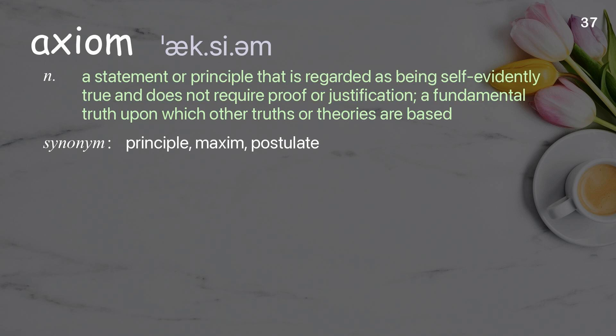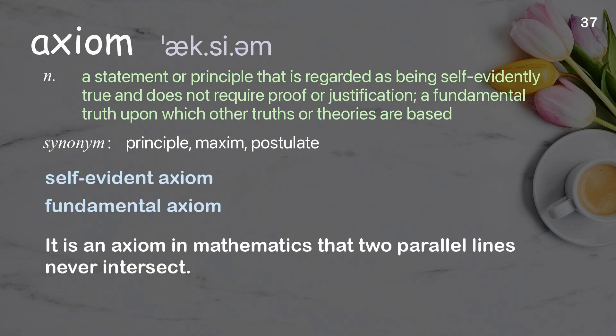Axiom: a statement or principle that is regarded as being self-evidently true and does not require proof or justification; a fundamental truth upon which other truths or theories are based. Examples: self-evident axiom; fundamental axiom. It is an axiom in mathematics that two parallel lines never intersect.